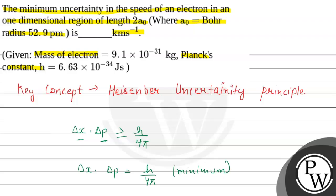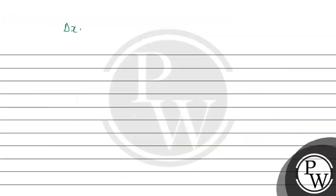According to the given question, we have to find the minimum uncertainty in the speed of an electron. Momentum is mv, where m represents the mass of the electron and v represents the velocity. So delta p equals m times delta v, because mass of the electron remains constant. Therefore, delta x times m times delta v equals h over 4π.